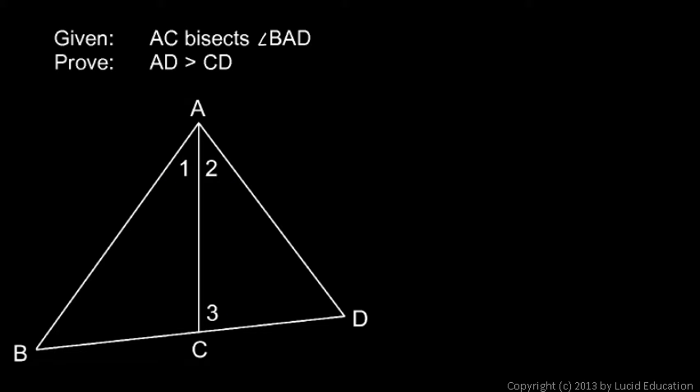I'll spell those steps out in a two-column proof with statements and reasons. And again, a good place to start, if you don't know where to start, is by simply stating your given information. So I'm going to say AC bisects angle BAD. In the left column here, I have a statement, and in the right column here, I have a reason. The reason I know that statement is true, and in this case, I know that's true simply because it's given.